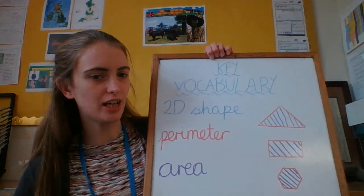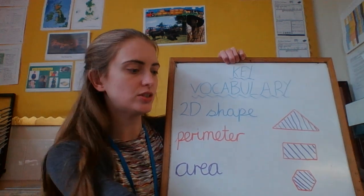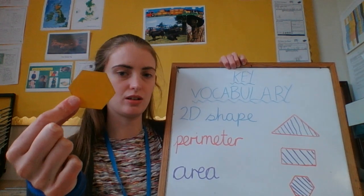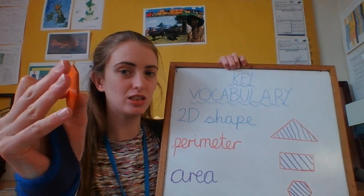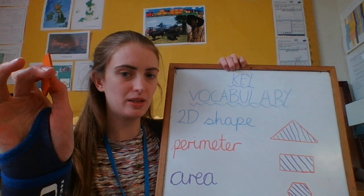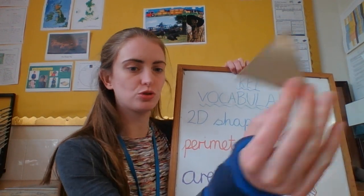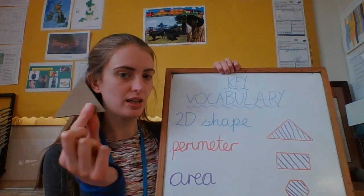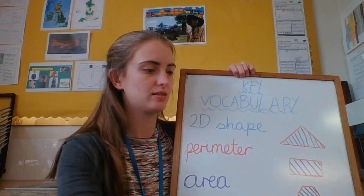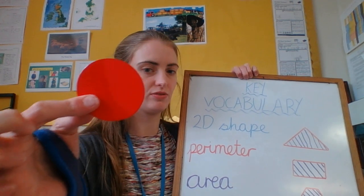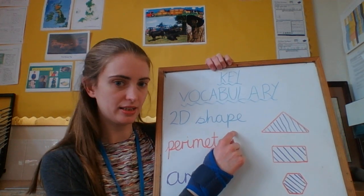Key vocabulary today: we have 2D shape. 2D shapes are these sorts of shapes — the flat ones. If you imagine these shapes are just drawn on a piece of paper, that is a 2D shape; it is something that is flat. So all of these different 2D shapes are what we're going to be looking at today.